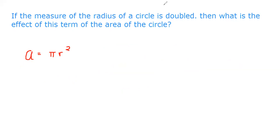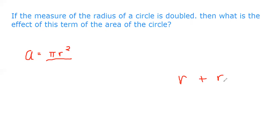Now back to the question: the radius is doubled. Doubling the radius means R + R = 2R, not R × R. So when we double R, we get 2R. We substitute 2R into the formula.